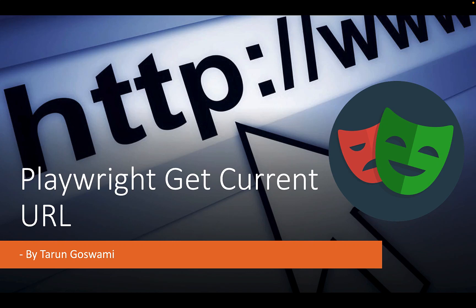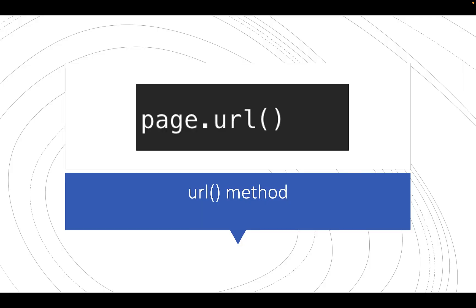Hello everyone. Today let's discuss how to get the current URL in Playwright. In Playwright, we can get the current page URL using the url() method linked with the page instance. So this is the syntax.